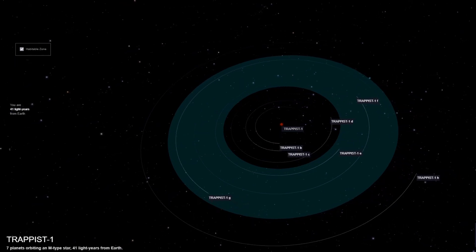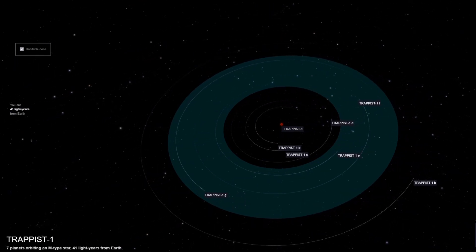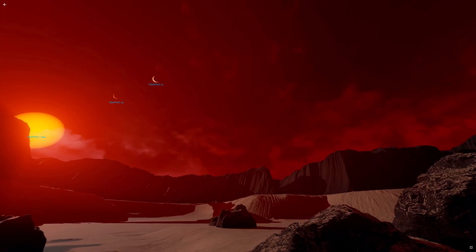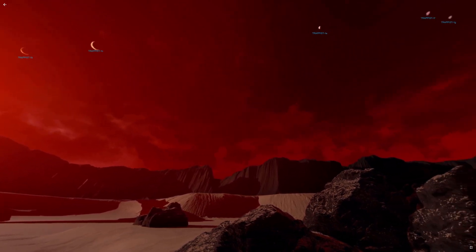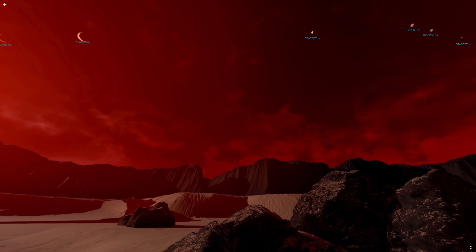The TRAPPIST system is an interesting one. In 2017, NASA announced the discovery of seven Earth-sized planets orbiting the star. Four of them are potentially habitable. TRAPPIST-1e, an Earth-sized rocky planet, may have liquid water on the surface, and at 40 light-years away, it's definitely worth a look.